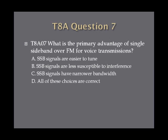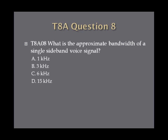Question 7: What is the primary advantage of single sideband over FM for voice transmissions? A. Single sideband signals are easier to tune. B. Single sideband signals are less susceptible to interference. C. Single sideband signals have narrower bandwidth. Or D. All of these choices are correct. Question 8: What is the approximate bandwidth of a single sideband voice signal? A. 1 kilohertz. B. 3 kilohertz. C. 6 kilohertz. Or D. 15 kilohertz.